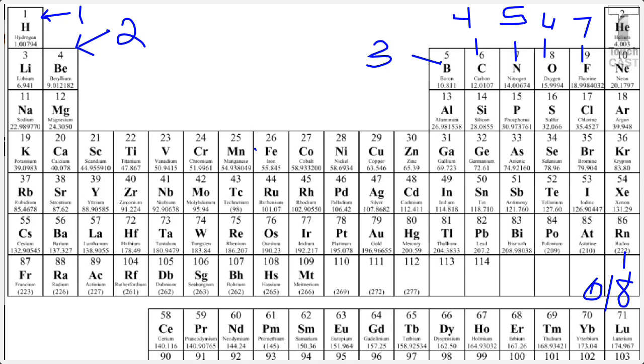Group 17 is called the halogens. And all of these elements in this group have 7 valence electrons. Group 18 is called the noble gases. And this is a special group because all of these elements have 8 valence electrons in their outer energy level. So since they already have those 8 valence electrons, they are already meeting the octet rule and they do not chemically react with the other atoms.